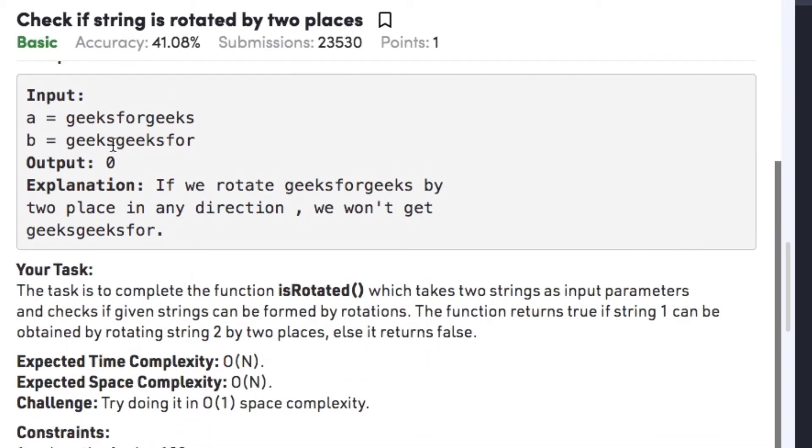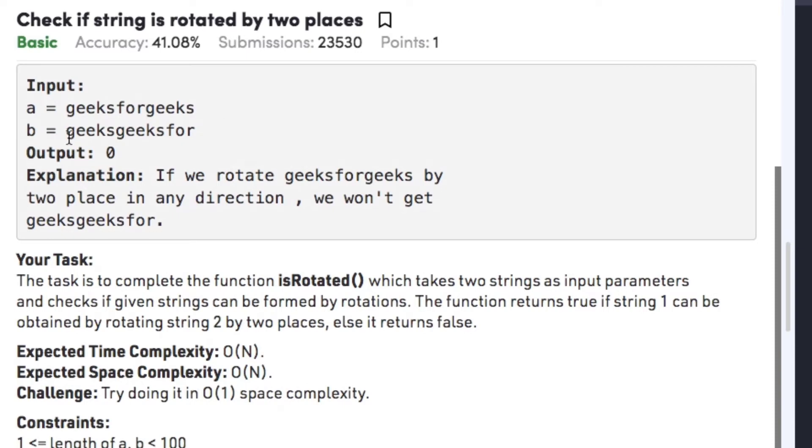Similarly in case of example 2, we have two strings namely geeksforgeeks and geeksgeeksfor. So as we can see that if we rotate the string A either anticlockwise direction or clockwise, we don't get the string geeksgeeksfor. Therefore the output here is 0.